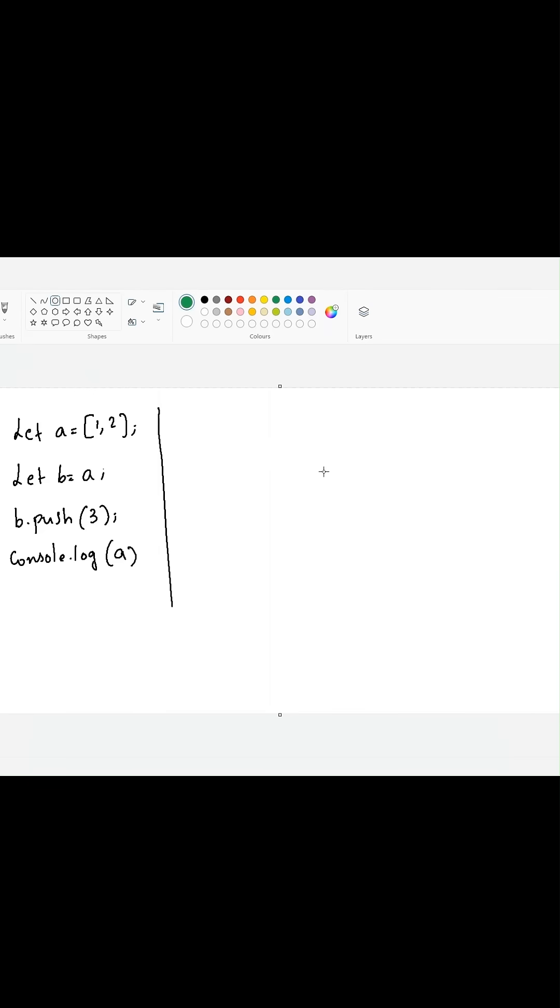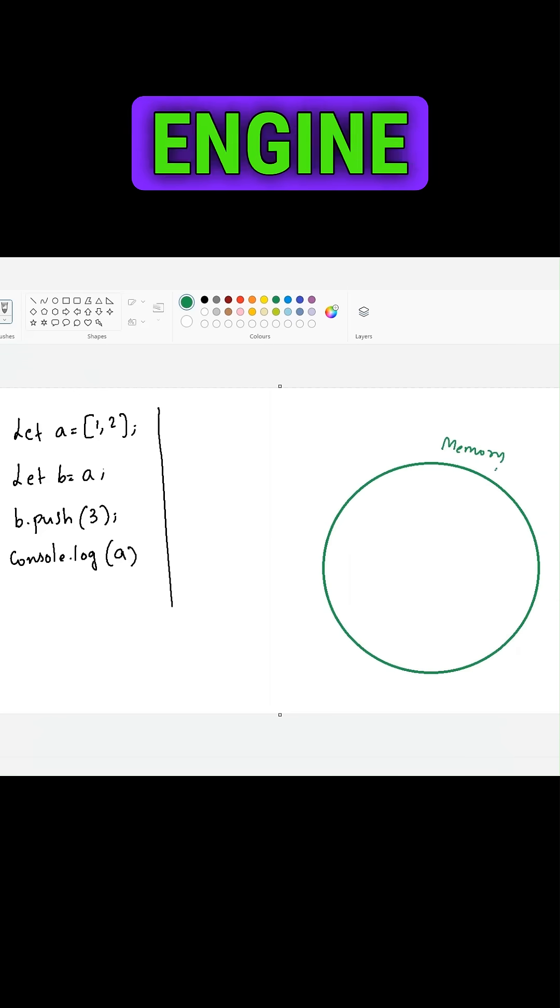In JavaScript, whenever it creates a variable, the JavaScript engine will allocate some space in the memory. So this is the memory the JavaScript engine creates for us.